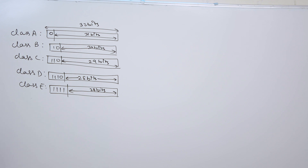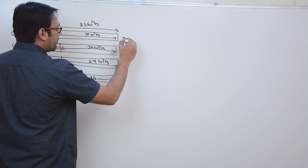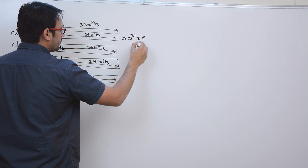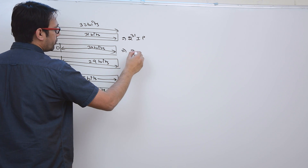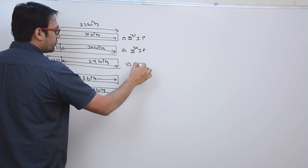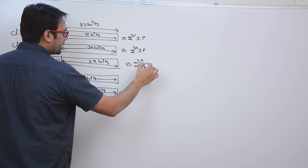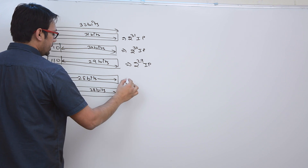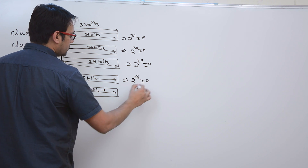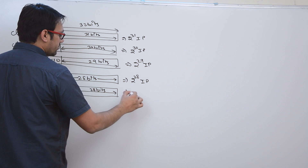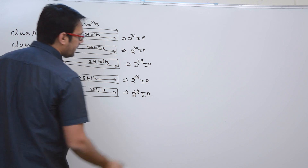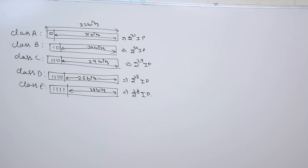From this, in case of class A we are going to have 2 raised to power 31 IP addresses. In class B, 2 raised to power 30. In class C, 2 raised to power 29. In class D, 2 raised to power 28. In class E, 2 raised to power 28 IP addresses.